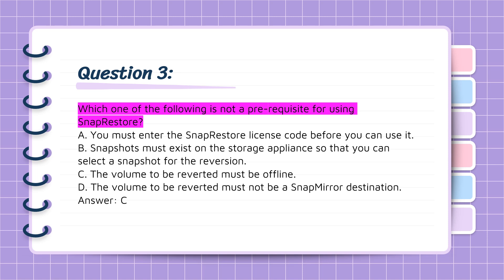Question 3: Which one of the following is not a prerequisite for using SnapRestore? A. You must enter the SnapRestore license code before you can use it. B. Snapshots must exist on the storage appliance so that you can select a snapshot for the reversion. C. The volume to be reverted must be offline. D. The volume to be reverted must not be a SnapMirror destination. Answer: C.